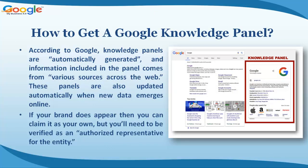According to Google, knowledge panels are automatically generated, and information included in the panel comes from various sources from across the web. These panels are also updated automatically when new data emerges online.